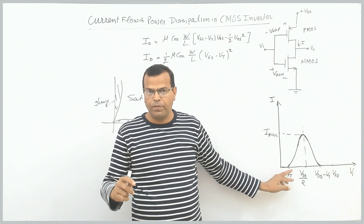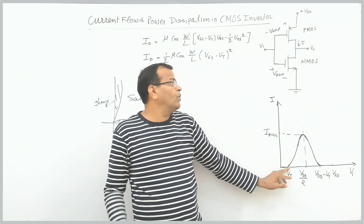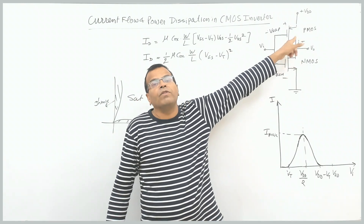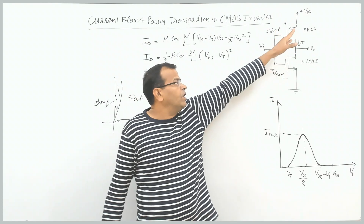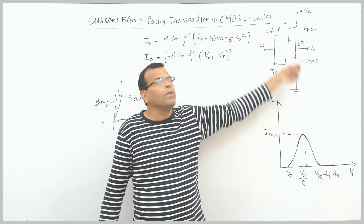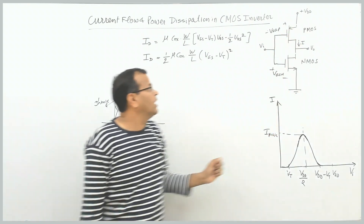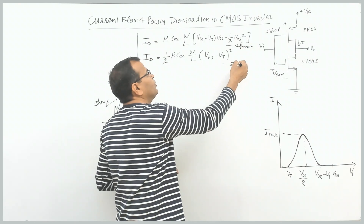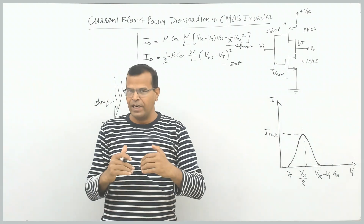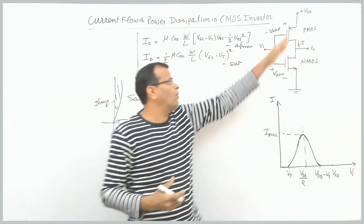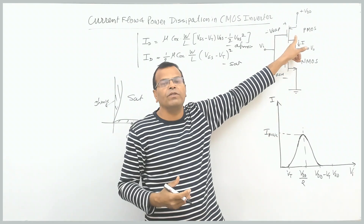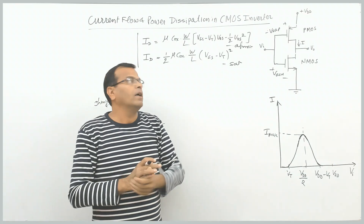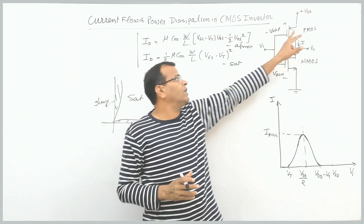When input voltage increases beyond threshold voltage, NMOS enters into saturation while PMOS remains in ohmic region. PMOS permits a certain current in ohmic region, and although NMOS tries to carry more current in saturation, the ohmic-region device restricts the overall current. So current will increase in this range. To summarize: for input 0 to Vth — NMOS cut-off, PMOS ohmic; for input Vth to VDD/2 — NMOS saturation, PMOS ohmic.